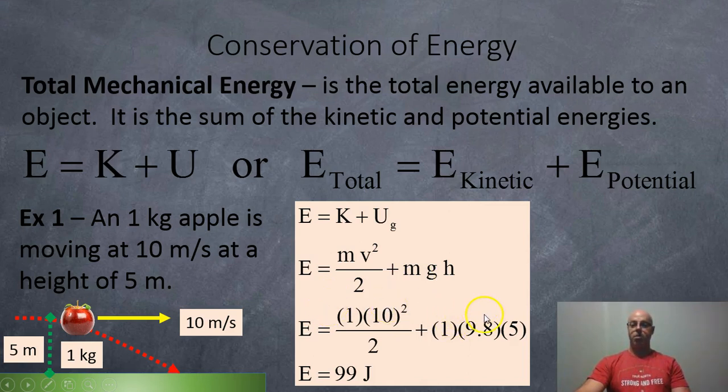1 for the mass, 9.8 for the gravity, and 5 for the height. And all together, this apple has 99 joules of total mechanical energy.